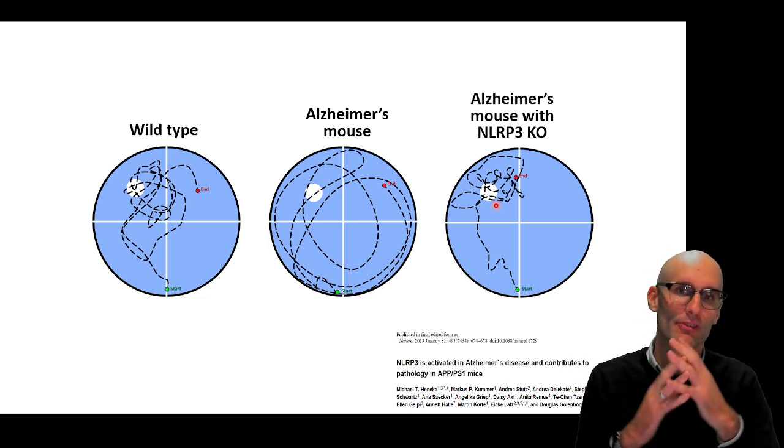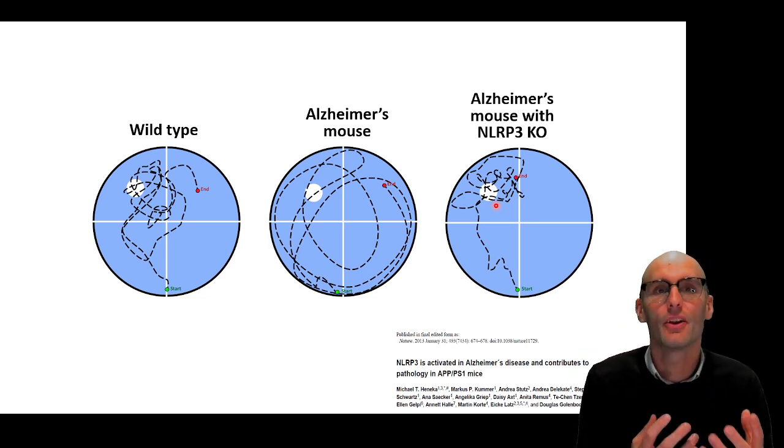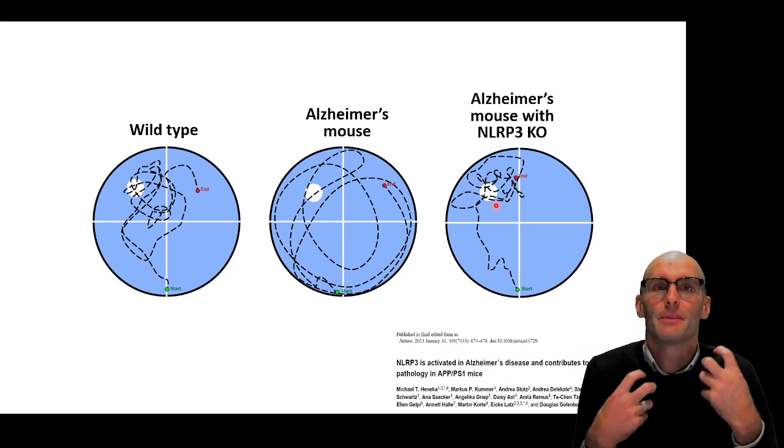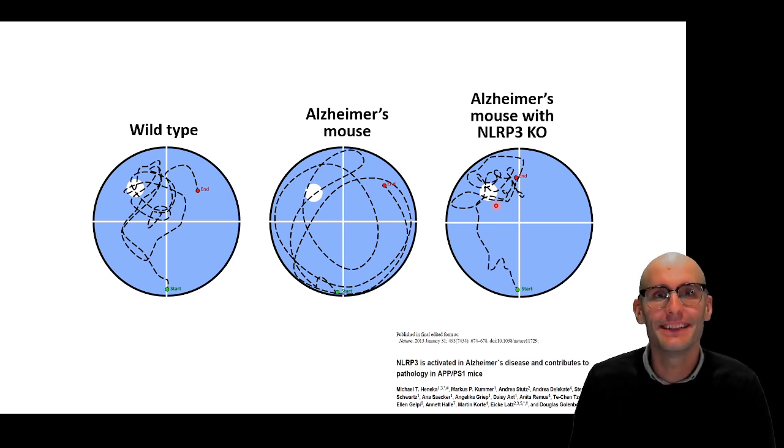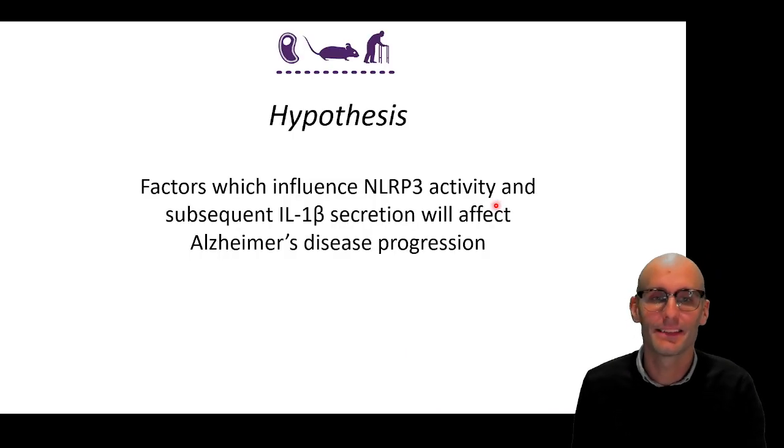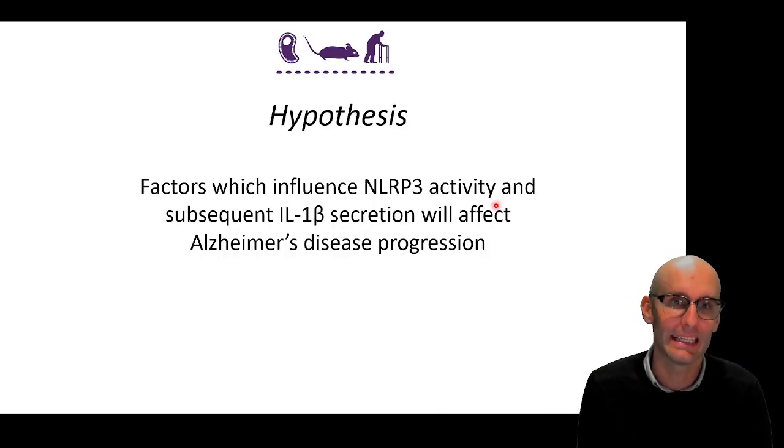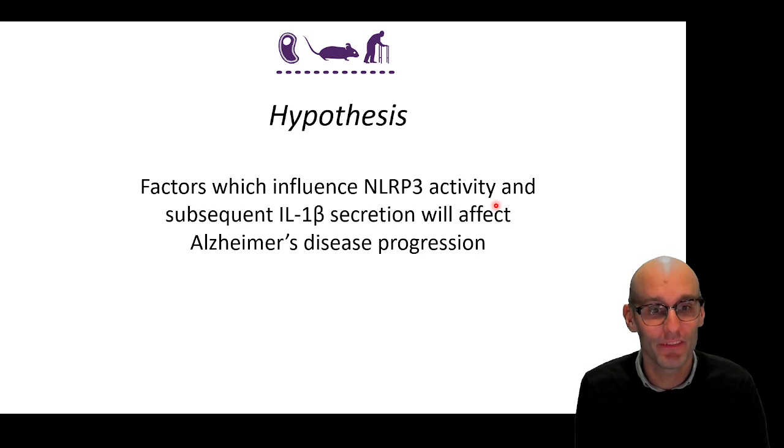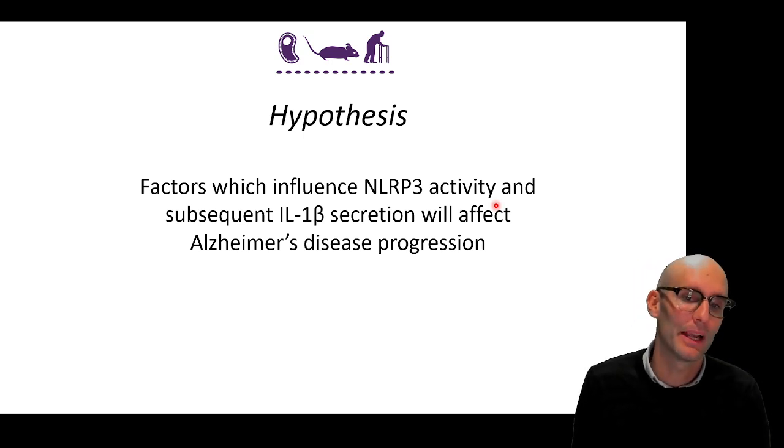So all of this background, this concept that we now know that inflammation is going on in Alzheimer's disease, it can predict how fast your cognitive decline is, it's mediated by the NLRP3 receptor, leads to this central hypothesis. Factors which influence NLRP3 activity, and subsequent interleukin-1-beta secretion, will affect Alzheimer's disease progression.